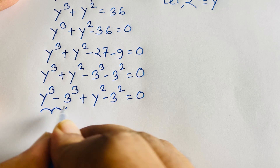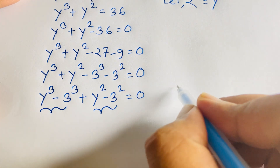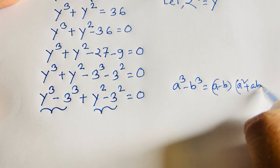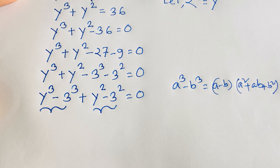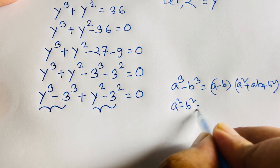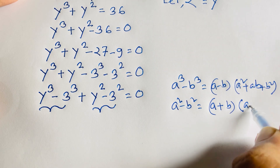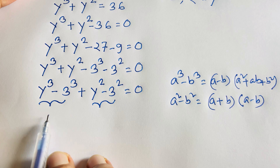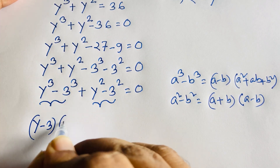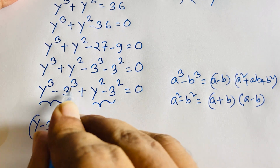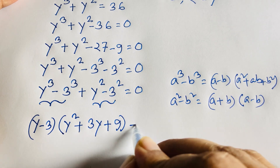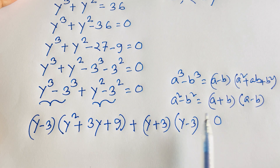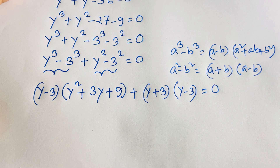I apply two identities here. The first is a³ minus b³ equals (a minus b)(a² + ab + b²). The second is a² minus b² equals (a + b)(a minus b). Applying these, the expression becomes: (y minus 3)(y² + 3y + 3²) plus (y + 3)(y minus 3) is equal to 0.